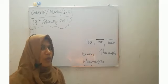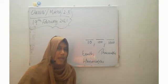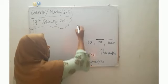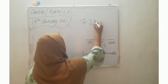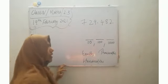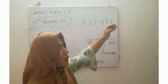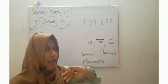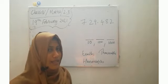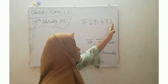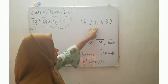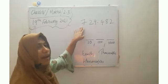So we studied the place value chart of decimal numbers. Before decimal, it is the whole number part. For example, in the case of seven hundred and twenty-nine point four eight two, the whole number part is seven hundred and twenty-nine. The decimal part is four eight two. The whole number part consists of three places: ones, tens and hundreds.